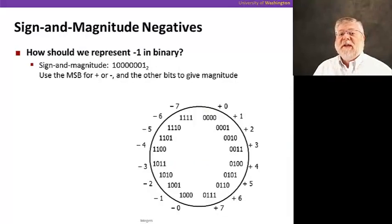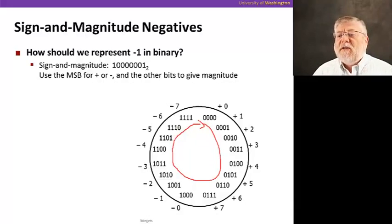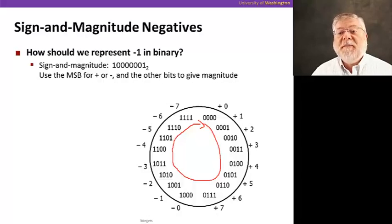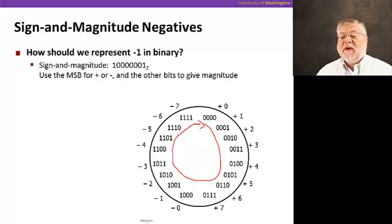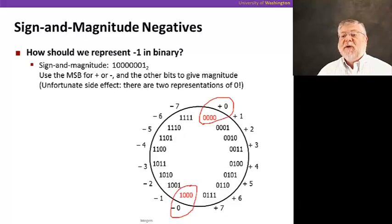So let's talk about sign and magnitude negative numbers in a bit more detail. Here I'm showing a number wheel for four-bit binary numbers. It starts at zero, zero, zero, zero, and as we increment by one we move around to one, one, one, one. If we continue to increment, we'd go back to zero, zero, zero, zero. On the outside of the circle is the number corresponding to each bit pattern. We have zero, one, two, three, all the way around to seven, and then the negative numbers on this side with the first bit being a one. A minus one in binary is represented in sign and magnitude with a leading one for the sign and then a value of one for the remainder of the bits.